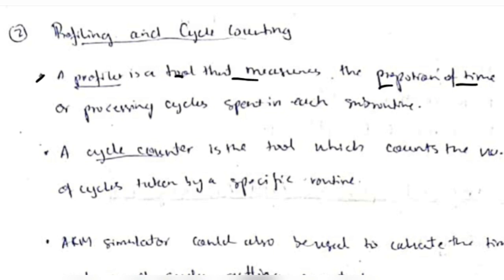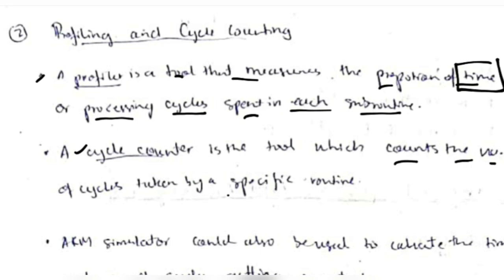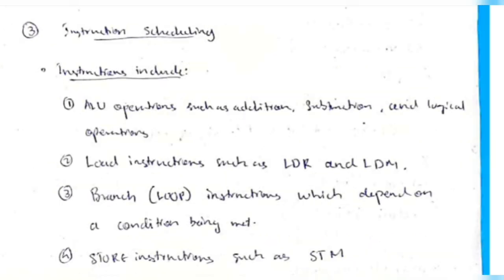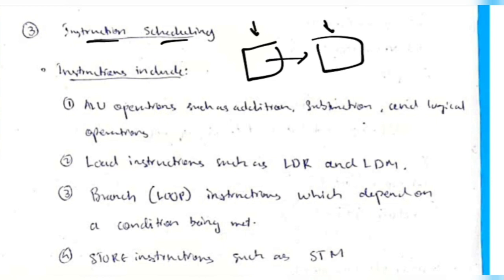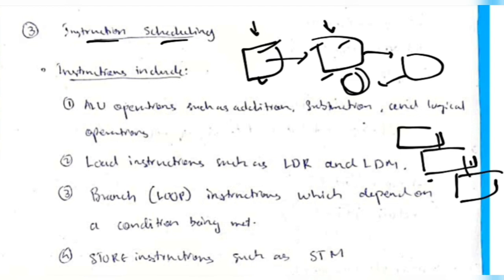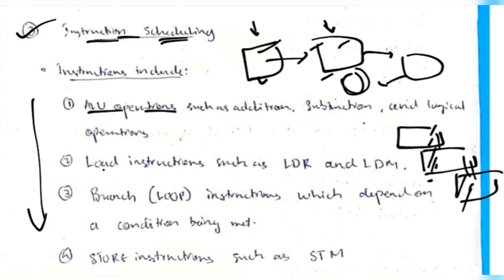Profiling and cycle counting: a profiler measures the proportion of time or processing cycles spent in each subroutine. A cycle counter tracks how many cycles a specific routine needs. By using these tools, we can identify bottlenecks and enhance processor performance. Instruction scheduling determines the optimal order of instructions — some tasks can be performed in parallel using pipelining, reducing total execution time.